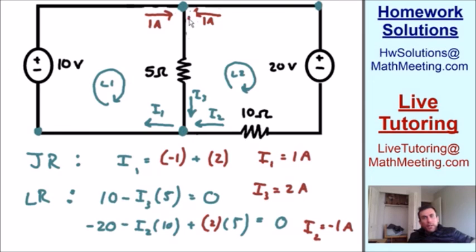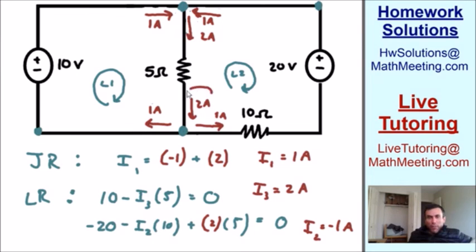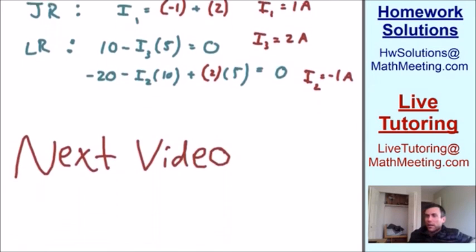Notice how the sum of the currents going into the top junction equals the sum going out: 1 amp from the left plus 1 amp from the right equals 2 amps going out — 2 in and 2 out. The same holds for the bottom node: 2 amps in equals 1 plus 1 amps out, which is also 2. This confirms Kirchhoff's Junction Rule. I hope this gave you a better idea on Kirchhoff's Laws and how to solve circuits.